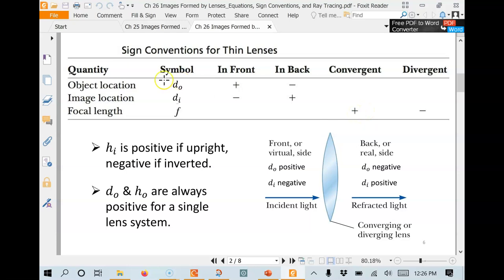For the object location, if in front it's positive. Well, for a single lens, the object's always going to be on the front side, so that's always going to be positive. So we're good there. And when we get to the image location, if the image is in the front, same as the object, it's going to be negative, whereas if it's in the back, it'll be positive. So we'll remember these things as we do this problem.